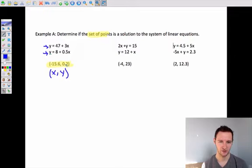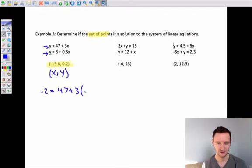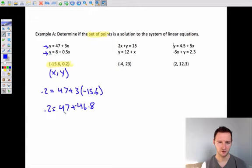And all you have to do to do that is plug in 0.2 for y, plug in negative 15.6 for x. So what that looks like is take this top equation, 0.2 instead of y equals 47 plus 3 times negative 15.6. So I'm going to plug in negative 15.6 instead of x. 3 times negative 15.6 is negative 46.8. 47 plus negative 46.8 is 0.2. 0.2 equals 0.2. So that is a solution for this top equation.